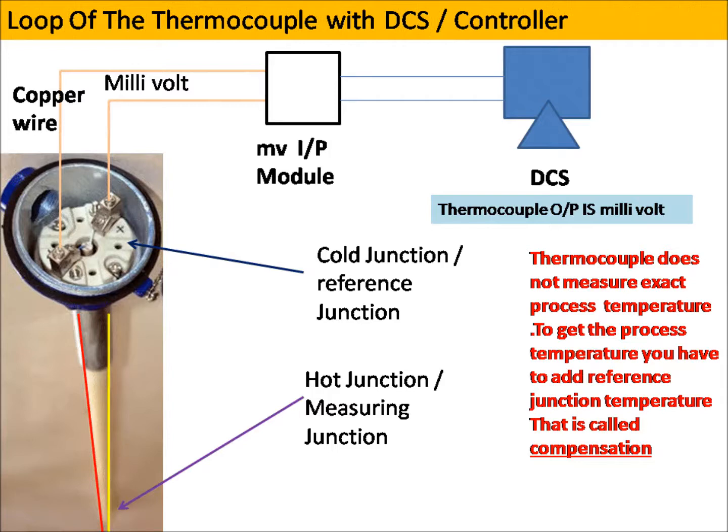As mentioned, the thermocouple does not measure the exact process temperature — it measures the temperature difference between the exact temperature minus the reference temperature, which is ambient temperature. To get the exact process temperature, you must add the ambient temperature. This is called compensation. The voltage generated by a thermocouple is a function of the temperature difference between the measurement and reference junctions.